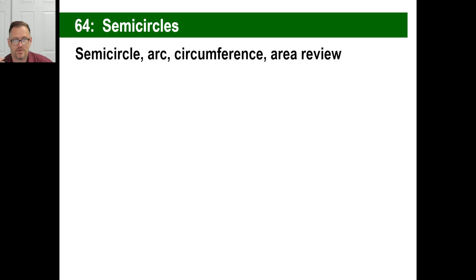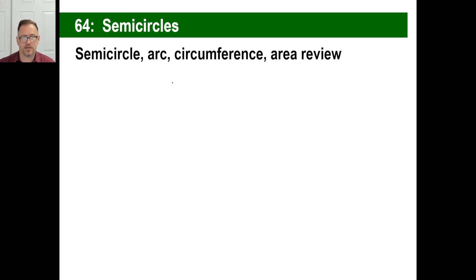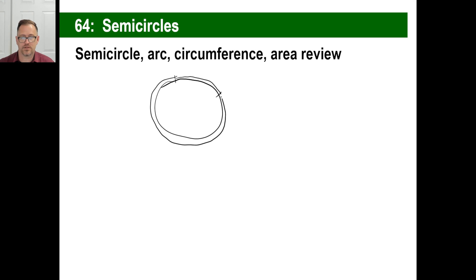Let's look at the definition of a semicircle. A semicircle is basically just half a circle. An arc — if you're looking at a circle — is the part of the circumference of the circle, something like from there to there. That's an arc. A circumference, don't forget, is the distance all around a circle.